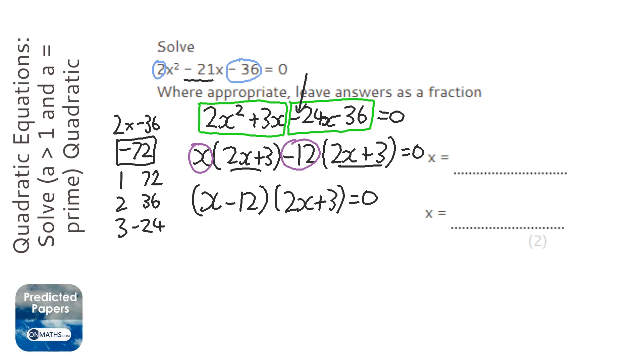Now the only way I can multiply two brackets together and get 0 is if one of them is 0. So I'm going to do the left-hand side first. x minus 12 equals 0, and I'm going to solve that. So I'm going to add 12 both sides.